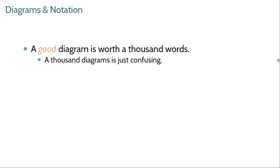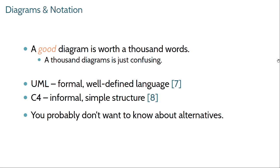There are different types of diagrams and notations available. Probably the only two worth worrying about are UML and C4. UML is a standardized language for describing object-oriented systems with a formal specification that defines it, meaning it's well-structured and well-defined with a rule for everything. The drawback is it's really easy to make invalid UML diagrams because it's really easy to break the rules, and it's really difficult to know all the rules — part of the reason people don't like UML is it's too well-defined.